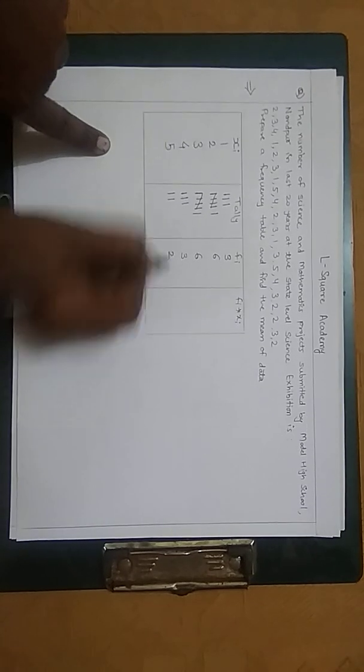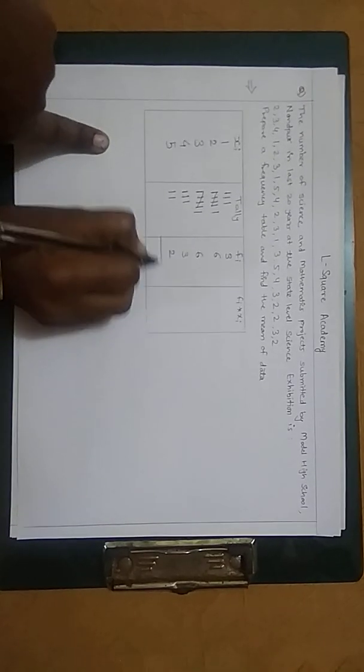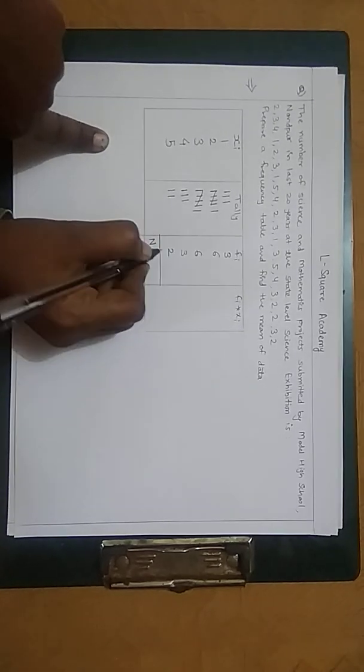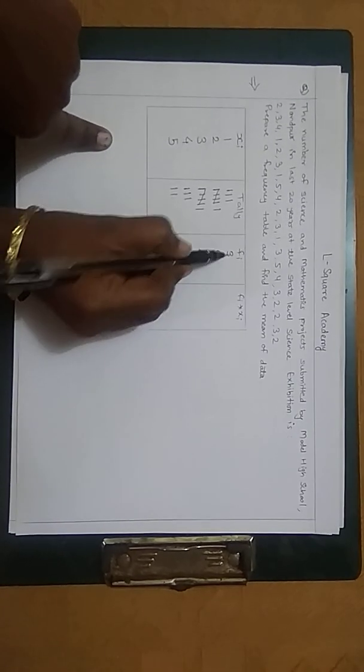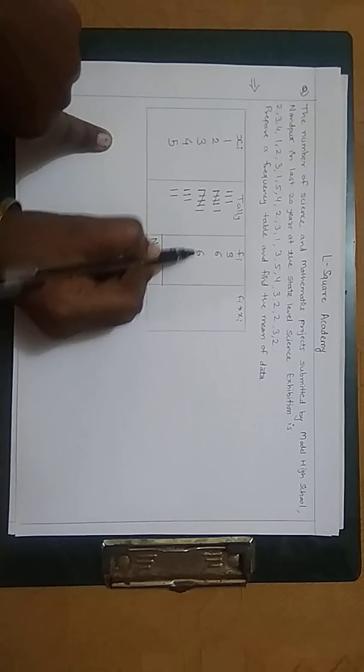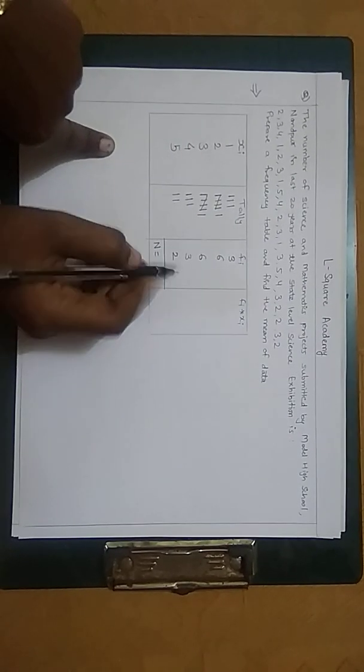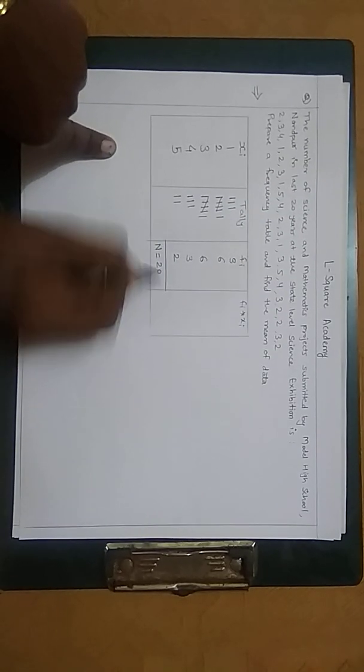Now here we have to calculate n, and n means the addition of these numbers. So 3 plus 6 is 9, 9 plus 6 is 15, 15 plus 3 is 18, and 18 plus 2 is 20.